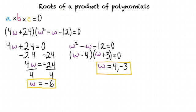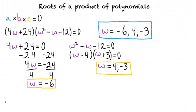So, the values of w that would make either of these two polynomials equal zero are negative 6, 4, and negative 3. If we plug any of these values into this equation, then at least one of these two polynomials would equal zero, and the entire product would equal zero. We can write our final answer as w equals negative 6 comma 4 comma negative 3.